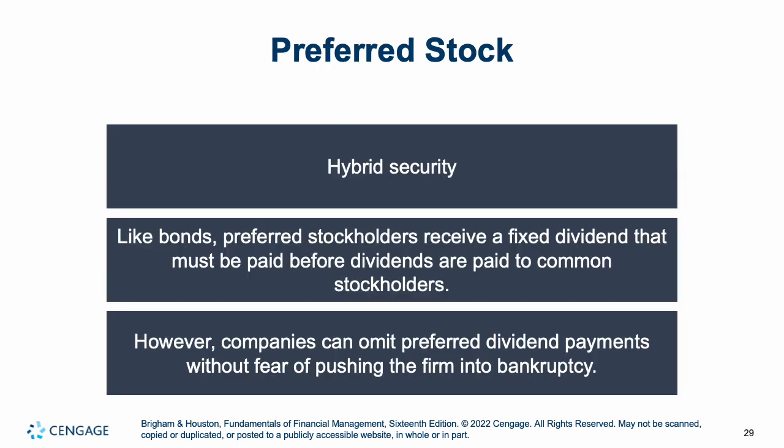Preferred stock — we'll look at it much more in one of the last chapters when we cover hybrid financing. Preferred stock is known as a hybrid security because it has characteristics of both equity and debt. Like bonds, preferred stockholders get a fixed dividend like a coupon payment. Preferred stock dividends must be paid before common stock dividends. However, if a company has a bad quarter and cannot pay a preferred stock dividend that period, they can miss one and it does not push the firm into bankruptcy — it is not a default.